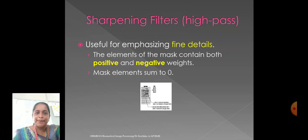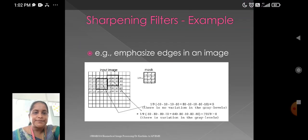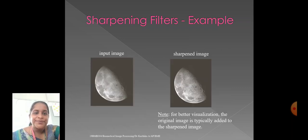And while coming into sharpening filters, high-pass filters, it is useful for emphasizing fine details. The elements of the mask contain both positive and negative weights, whereas a low-pass filter contains only positive elements. The mask elements summed to zero, but in low-pass, the value is one. This is an example for sharpening filters. Emphasize edges on an image. It emphasizes only edges in the image. Here we have input image and the sharpened image. The image is fully sharpened. For better visualization, the original image is typically added to the sharpened image.